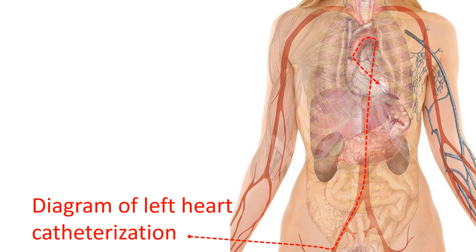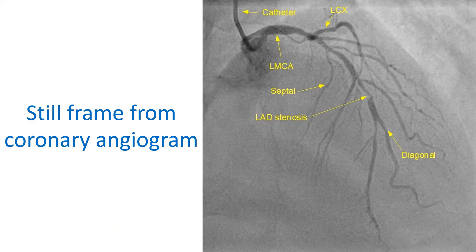Blood vessels in the groin, arm, and neck are chosen for this study. In adults, the test can be done under local anesthesia. In children, as they are afraid of procedures, general anesthesia is needed. A related test known as angiography is also often done along with cardiac catheterization.